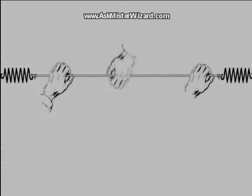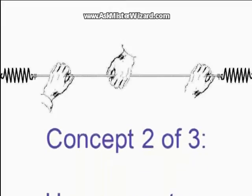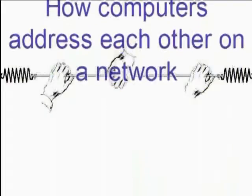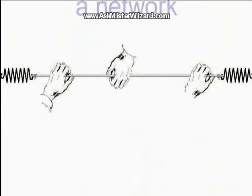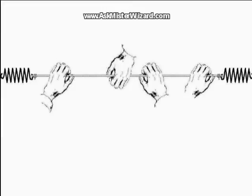But now, suppose that a third person joins the network by placing his hand on the rope, as illustrated here. Now, when you send a message, it's no longer obvious which of the other two parties is the intended recipient. To help solve this problem, network engineers agreed a long time ago to give each connection on a network a name or a number. We refer to this as the station's address, and every station on a network segment needs to have a unique address. As computers evolved and networks grew, it became commonplace to have more than two or three computers on a network segment — some segments have hundreds.